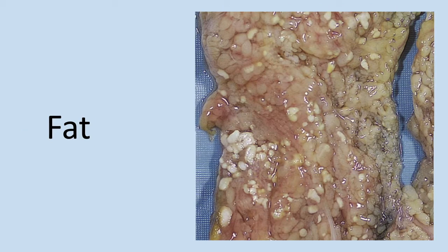Next is fat necrosis, which refers to a focal area of fat destruction, most commonly exemplified by the pancreas. When there is some pancreatic destruction, lipases leak out into the surrounding tissue and start to break down fat. The fat cell membranes become liquefied, their triglyceride contents get split, and the released fatty acids combine with calcium to form chalky white deposits — also referred to as fat saponification.